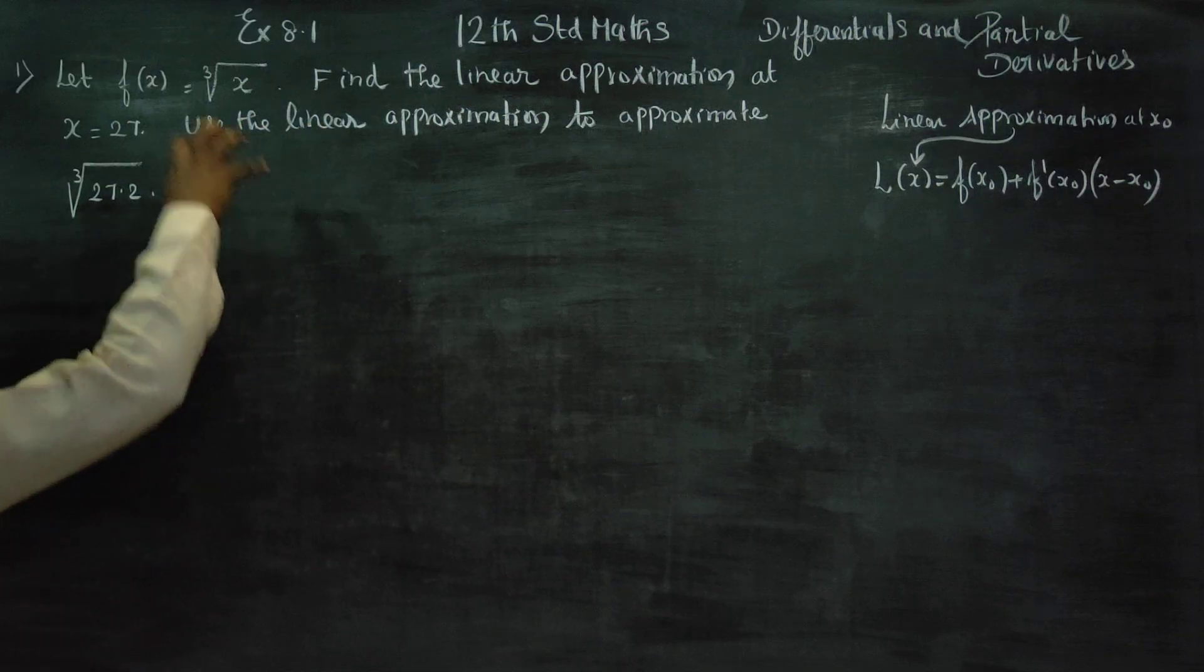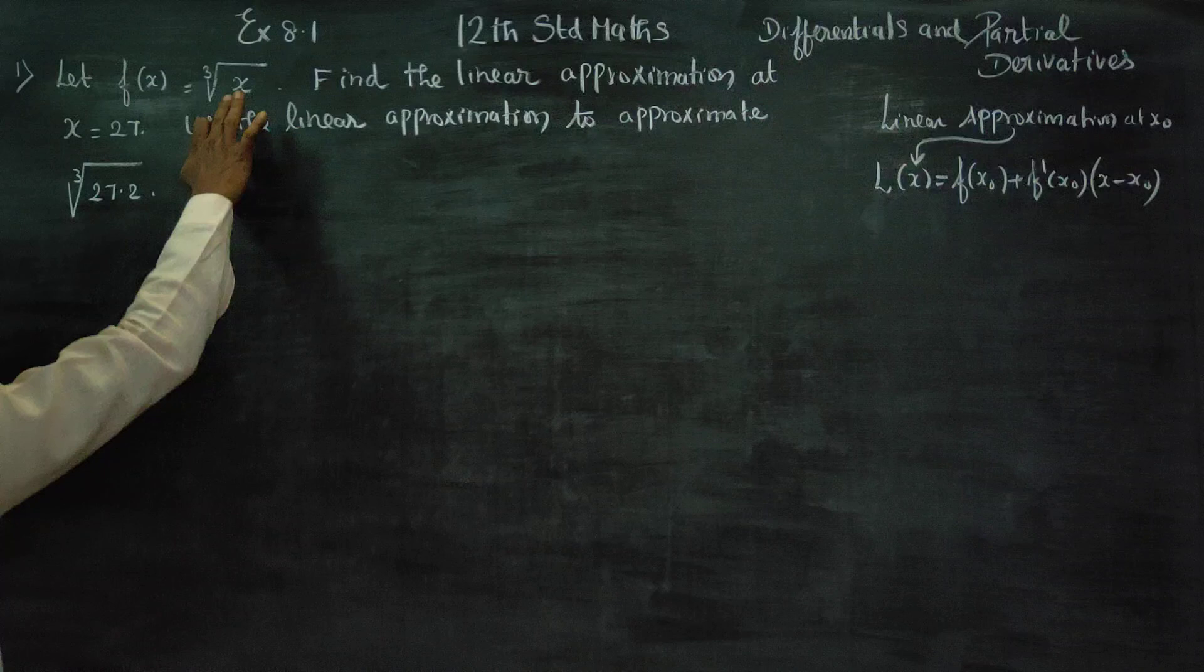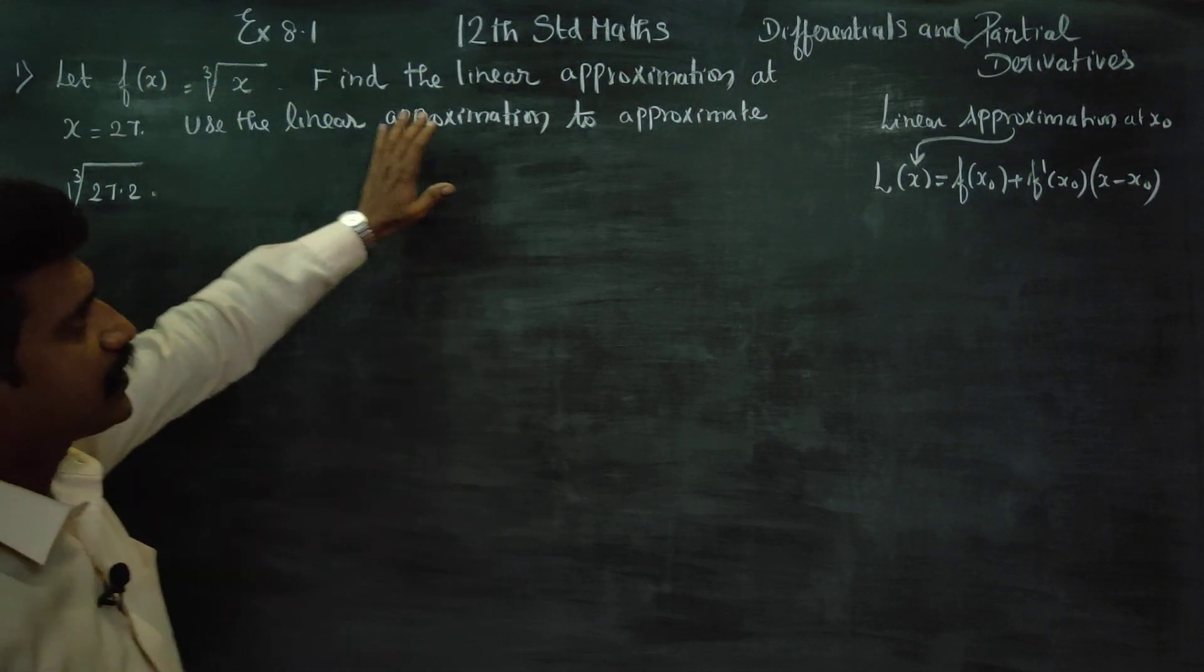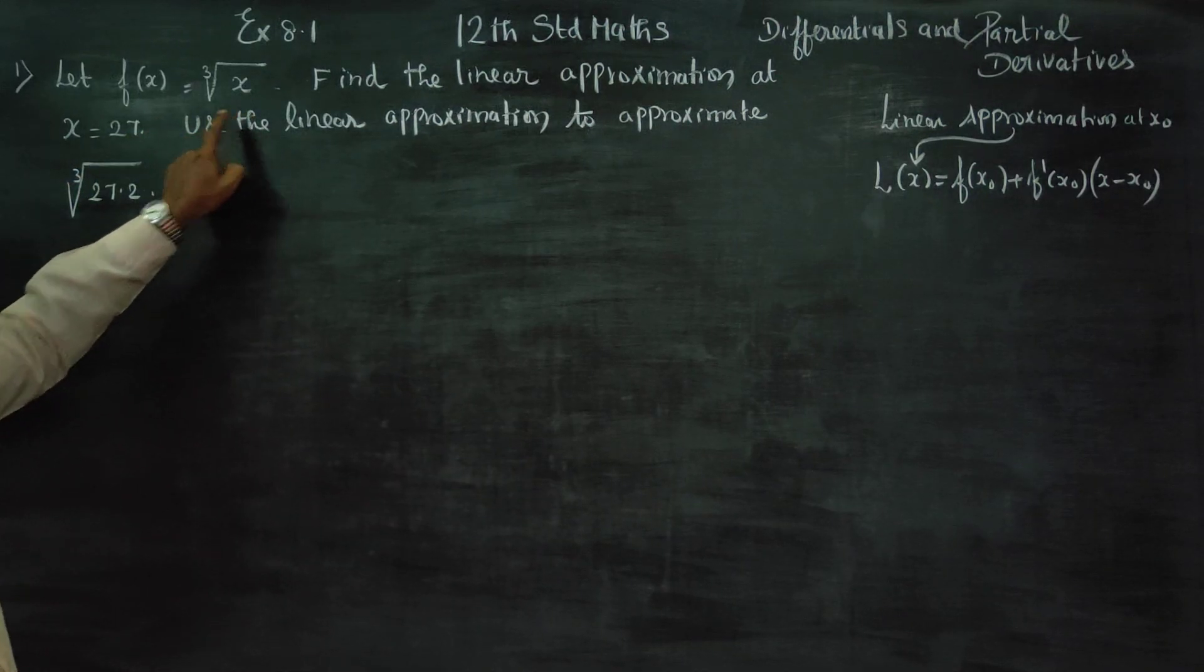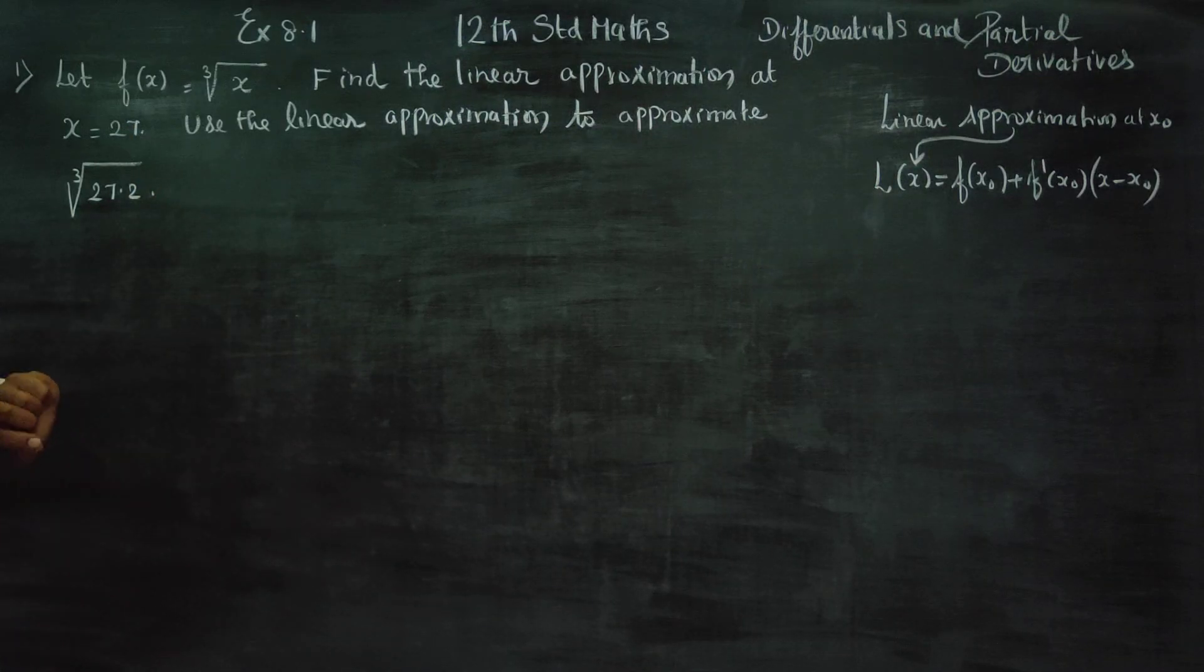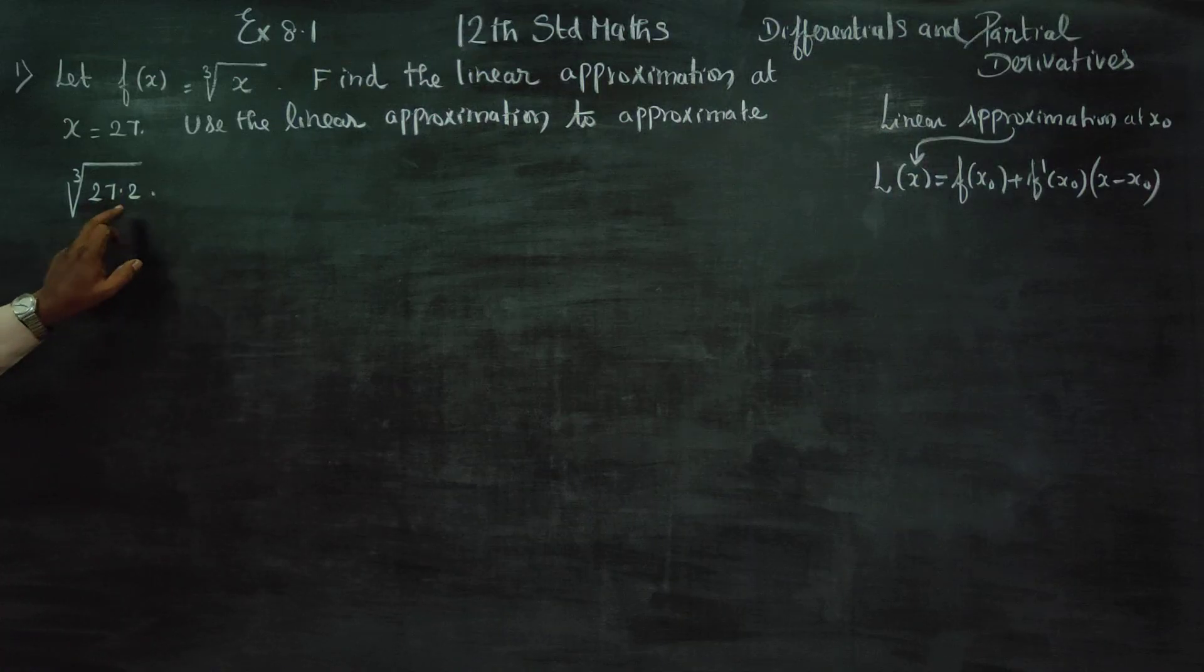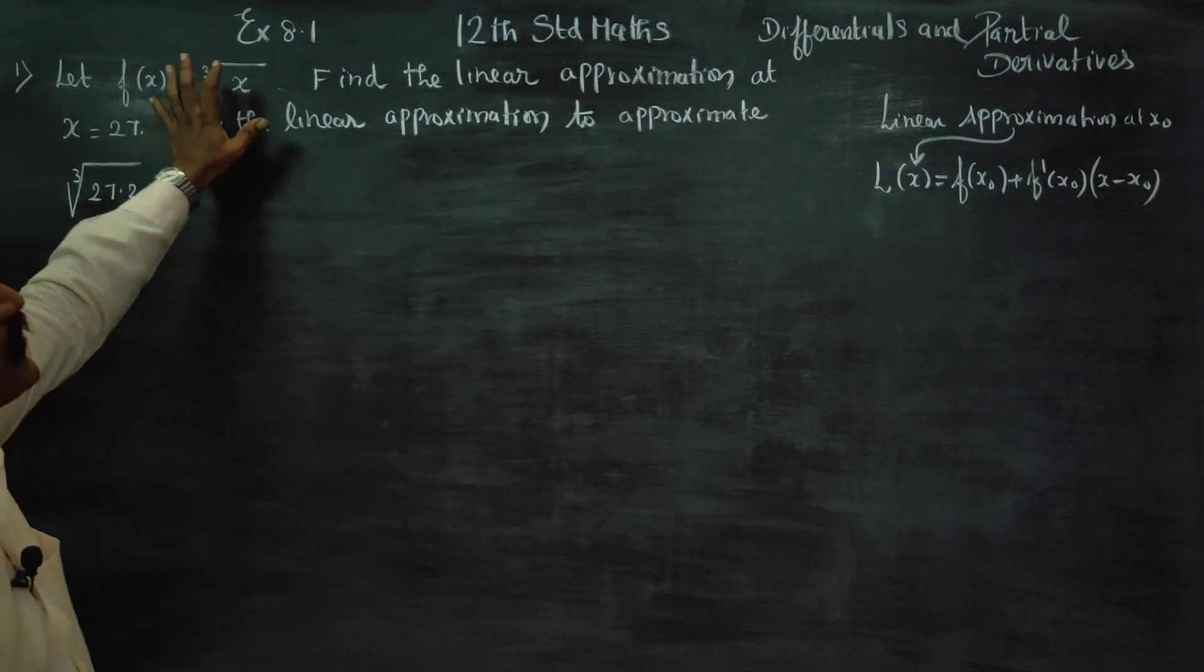In this problem, cube root of x is the function in a single variable. We need to find the linear approximation at the point x equals 27, because this is a comfortable point where the cube root is easy to calculate. Then, cube root of 27.2 is difficult to calculate, so we will find the approximate value. We are going to use differentials.